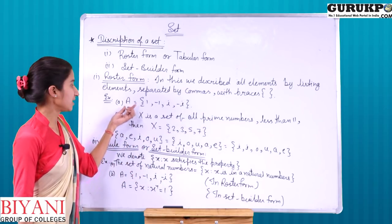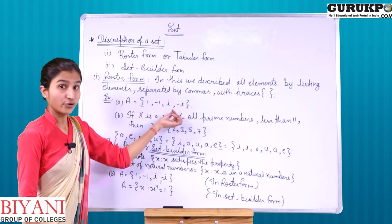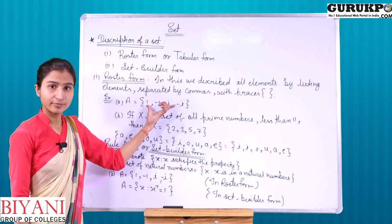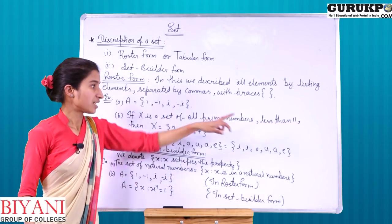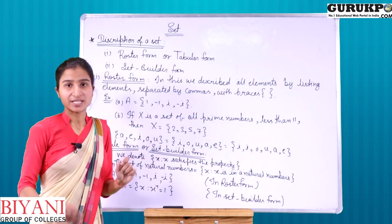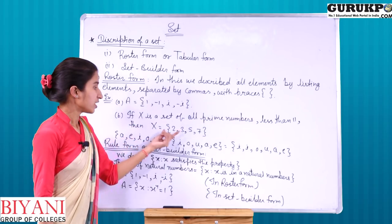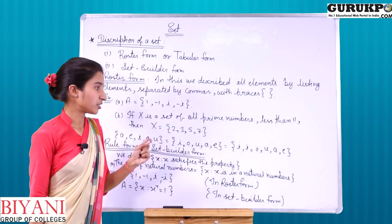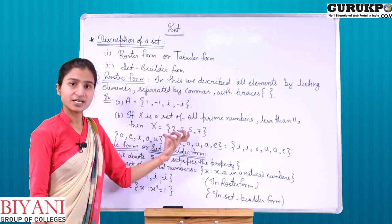For example (a): the set is {1, −1, i, −i} — these elements are separated by commas in curly brackets. And (b): if X is the set of all prime numbers less than 11, then in roster form we write X = {2, 3, 5, 7} — only four prime numbers, written separated by commas in curly brackets.